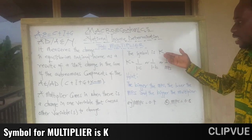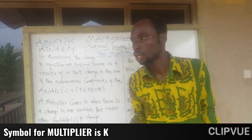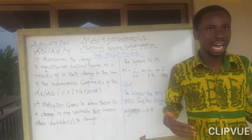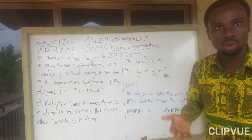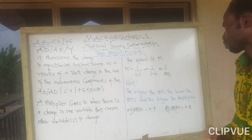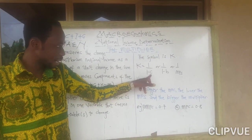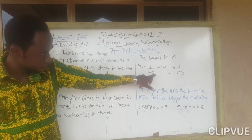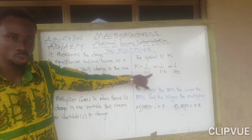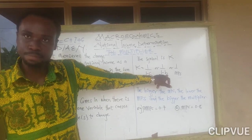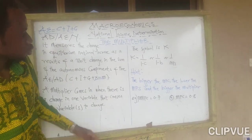The symbol for the multiplier is K — named after Keynes. The formula for the multiplier is K = 1 / (1 − MPC), where MPC is the marginal propensity to consume. We can also use the variable B depending on what notation you prefer.